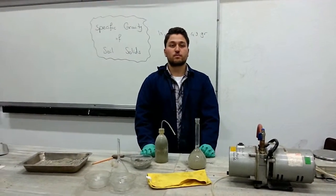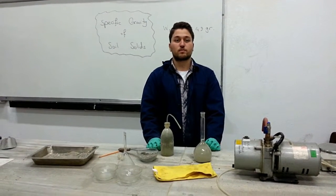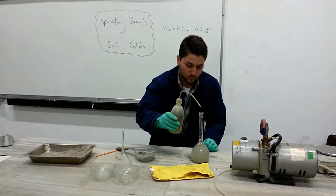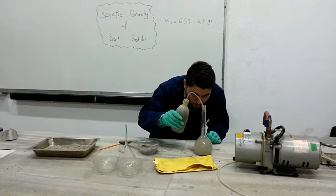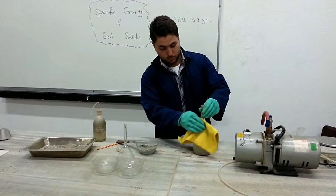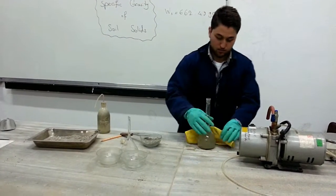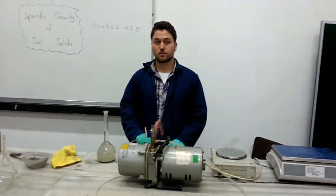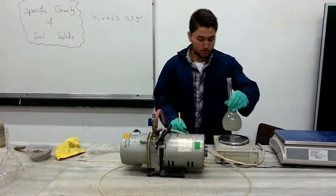We bring the temperature of the soil-water mixture in the volumetric flask down to room temperature. Then we add distilled water to the volumetric flask until the bottom of the meniscus touches the 500 ml mark. We dry the outside of the flask and the inside of the neck above the meniscus. The next step is to determine the combined mass of the bottle plus soil plus water.